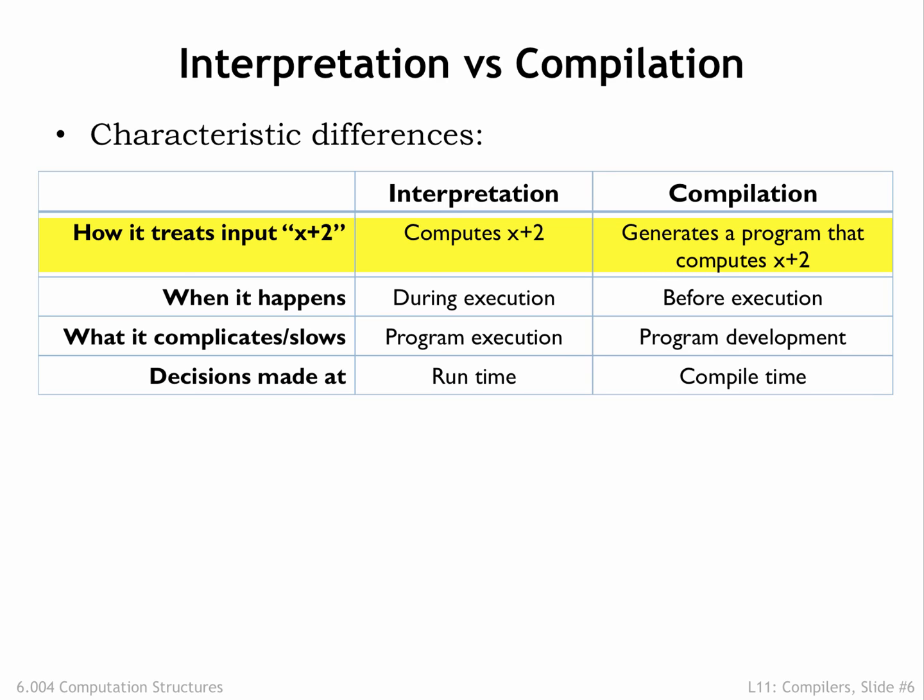On the other hand, the compiler would generate beta instructions that would load the variable x into a register and then add 2 to that value.